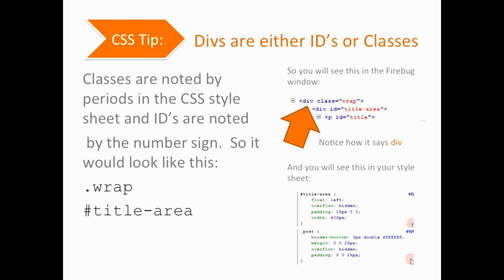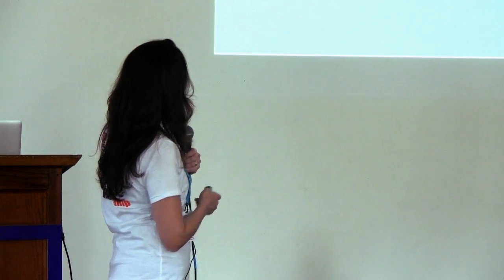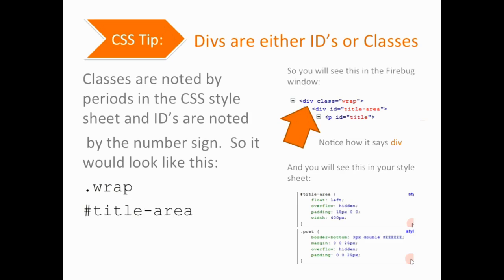Sometimes when you're working with CSS, you'll have the right word but it's not working — that's because you've either got a period or a hashtag instead of the other one, so just make note of that. When you're in the div, that's what it's going to look like when you're using View Source or Firebug, and then in your stylesheet this is what it's going to look like — it's going to have that hashtag or the dot.